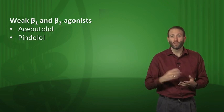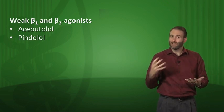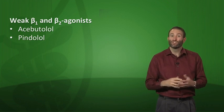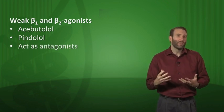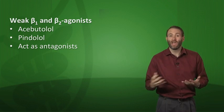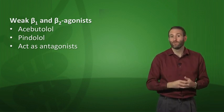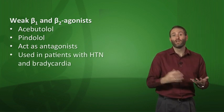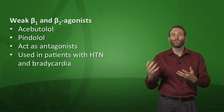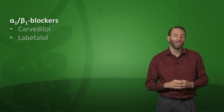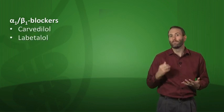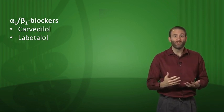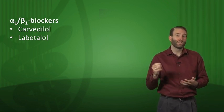Two unusual beta blockers are acebutolol and pindolol. They are actually very weak agonists at beta-1 and beta-2, but because they are so weak, they act as blockers by preventing the much more potent effect of epinephrine or norepinephrine on those same receptors. You'd consider these in patients with hypertension and bradycardia, since they don't decrease heart rate as much. Then we have the hybrid alpha-beta blockers, carvedilol and labetalol, which block alpha-1 and beta-1, giving you the regular beta-blocker effect plus some peripheral vasodilation.